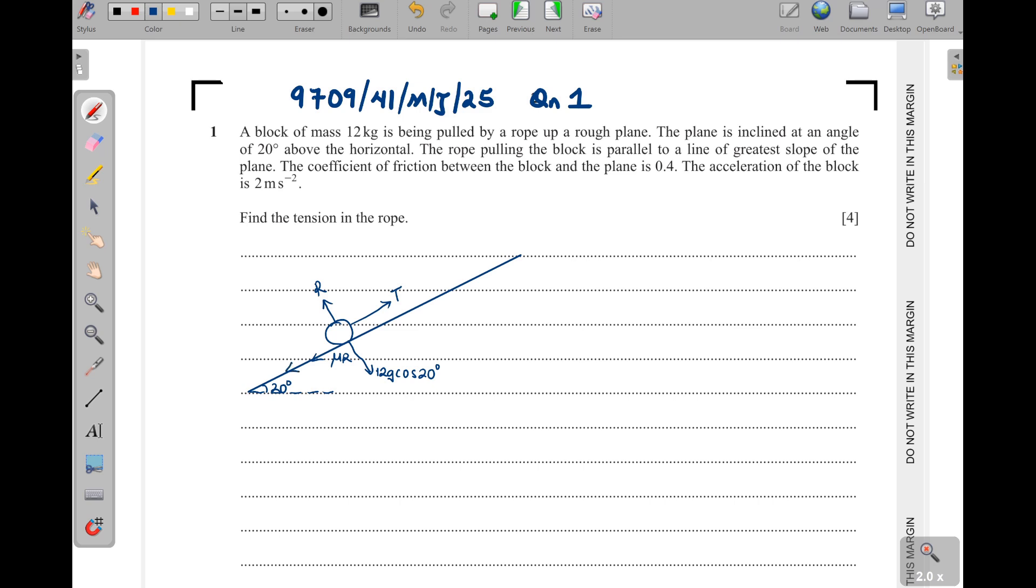And then remember there is mg here. So when we open up, opening is sine, closing is cosine. So this will be 12g sine of 20.